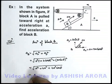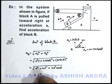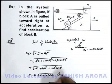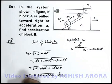Now if we take this a common out, we'll be having it is root of 5 plus 4 cos theta. This is the answer to this question which is the acceleration of block B.